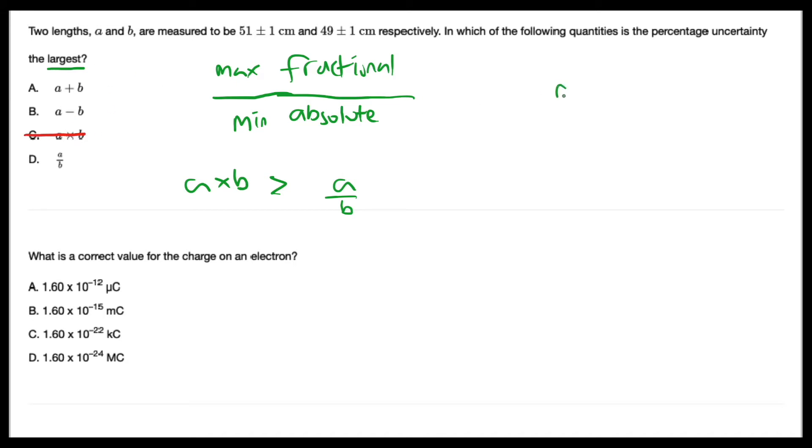And the same with A + B and A - B. A + B is definitely greater than A - B, but both of them have an uncertainty of ± 2 because for addition and subtraction, you add up the uncertainties together. So we know A + B must be wrong.